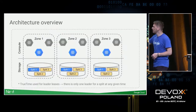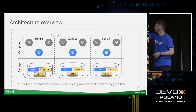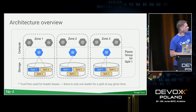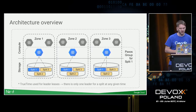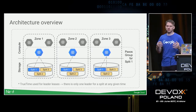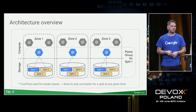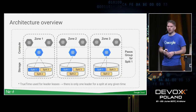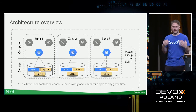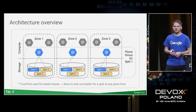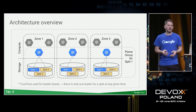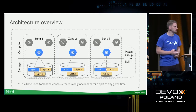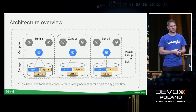You have compute engine instances responsible for a split. In each zone, one compute engine instance is responsible for a split, and these form a Paxos group. That Paxos group is used for leader election — to ensure we have at most one leader for any piece of data. By having only one leader for a data piece, we achieve strong consistency. If there were two leaders, you could get inconsistencies across your distributed database. We use Paxos to choose this leader.